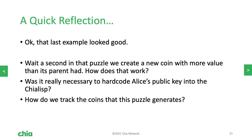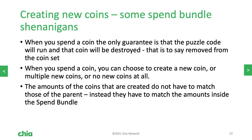So that last example looked pretty good, but I just want to pause so you can think about what you've seen. In that puzzle, we created a new coin with more value than the parent coin had — how does that work? Was it really necessary for us to hardcode Alice's pubkey into the Chia Lisp? And how do we track the coins that this puzzle generates? Let's talk about amounts and creating new coins, and some fun that you can have with spend bundles. When you spend a coin, the only guarantee is that the puzzle code will run and that the coin will be destroyed. You can choose to create a new coin, multiple new coins, or no new coins at all. This is done with the create-new-coin condition. When you create new coins, the amounts don't have to equal those of the parent — instead the accounting is done at the scope of the spend bundle. So as long as the spend bundle amount is not printing new money, you can play flexible games inside.